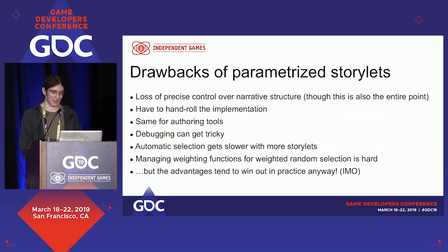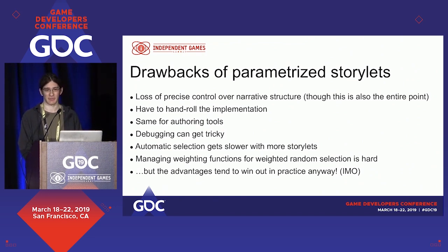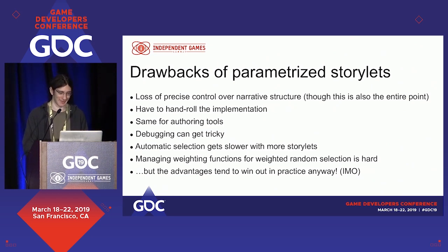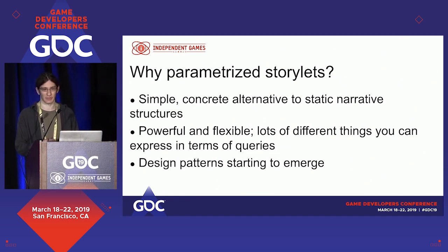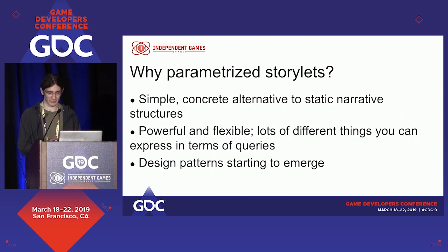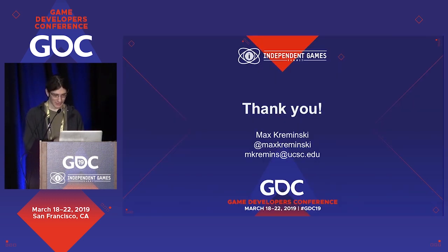I'll skim briefly over disadvantages: you lose precise control over the narrative structure — though that's kind of the point. You have to handle the implementation yourself; you can't just drop something into Unity and get parameterized storylets. There's no Twine equivalent yet — I'm working on that. Debugging gets tricky; you have to write a lot of JSON by hand. But I think it's super powerful as an approach: it's a simple concrete alternative to static narrative structures, really flexible, you can express lots of different ideas with these queries, and design patterns in games using these techniques are starting to emerge — Cultist Simulator is a great recent example. Thank you.